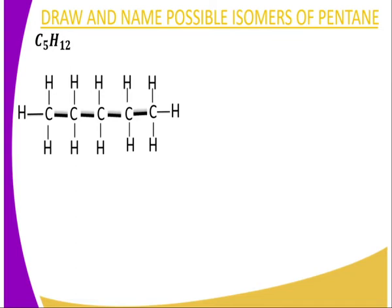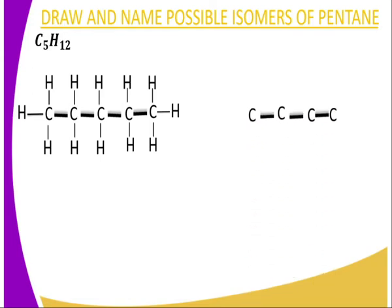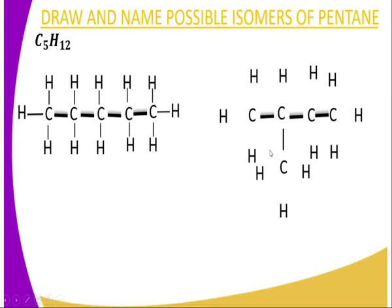We can also draw a different structure with five carbon atoms and twelve hydrogen atoms. First, we eliminate the carbon at the far end, and draw four carbon atoms bonded covalently to each other. Then the fifth carbon is positioned at carbon number two or carbon number three, as shown in the diagram. So we have five carbon atoms covalently bonded to one another, and when we substitute the open bonds of carbon with hydrogen, this gives us the same number of hydrogen atoms — twelve. So we have two different structures having the same molecular formula: two isomers of pentane.